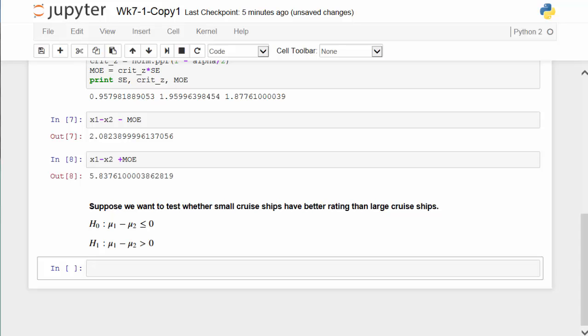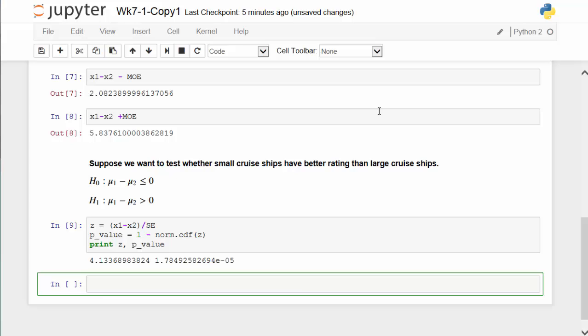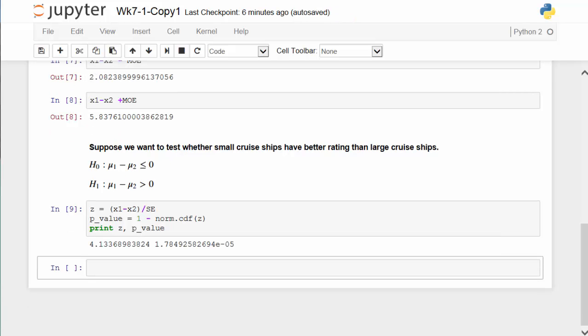Next, let's compute the z-score and the corresponding p-value. The z-score is more than 4. That is to say, we are talking about more than 4 standard deviations above from the mean. As a result, as you can imagine, the p-value is extremely small. That is equal to 1.78 times 10 to the negative 5. That is roughly 0.002%, way less than our significance level of 5%. As a result, we are going to reject the null hypothesis and conclude that indeed the smaller cruise ships have better rating than large cruise ships.